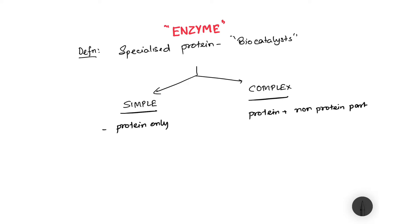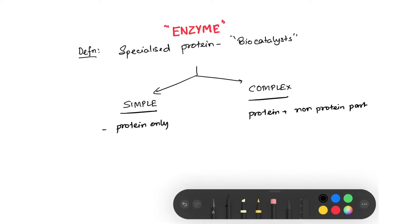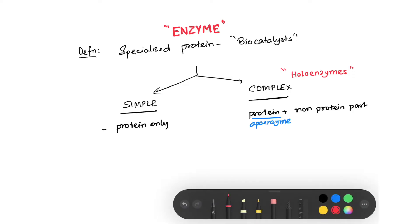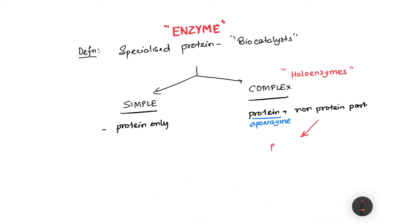These complex enzymes are also termed as holoenzymes. In the holoenzyme, the protein part is termed as the apoenzyme, and the non-protein part has several other names. The non-protein part can be known as either a prosthetic group or a cofactor.